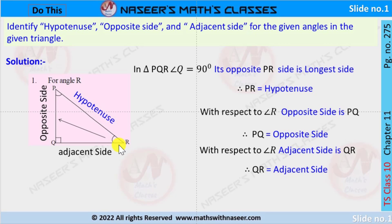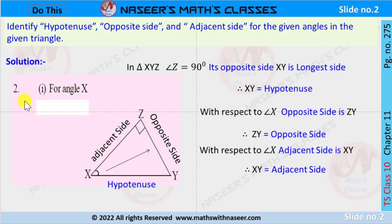With respect to angle R, the adjacent side is QR. Now we solve the second problem, first part: identifying the hypotenuse, opposite side, and adjacent side in triangle XYZ in which angle Z is equal to 90 degrees.